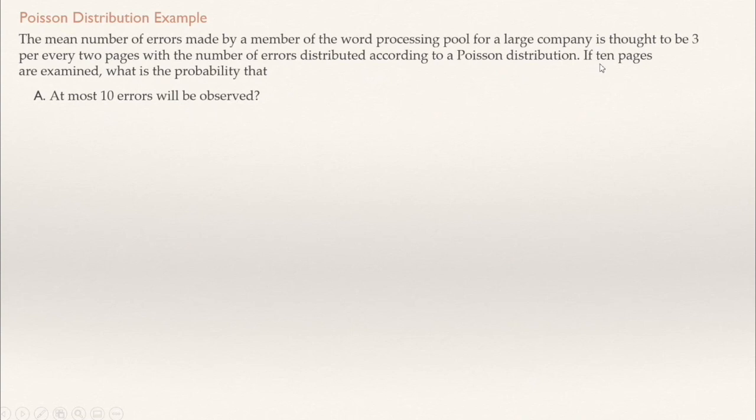We are assuming 10 pages. There are three different questions, and these are the usual questions in a Poisson distribution problem. What is the probability that exactly 10 errors will be observed?